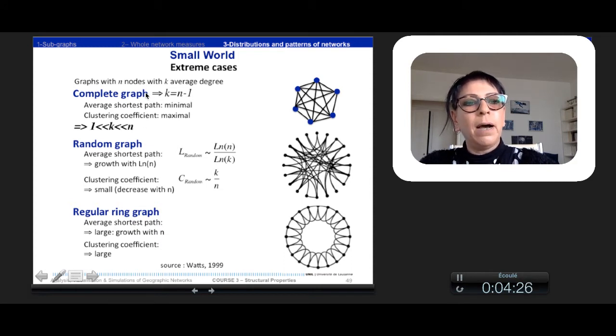The complete graph will have a k very high because all nodes are linked to n-1. And so the average shortest path is really minimal and the clustering coefficient is maximal. But the problem is that the complete graph does not assume the condition of k largely inferior to n. So we can eliminate this kind of network.